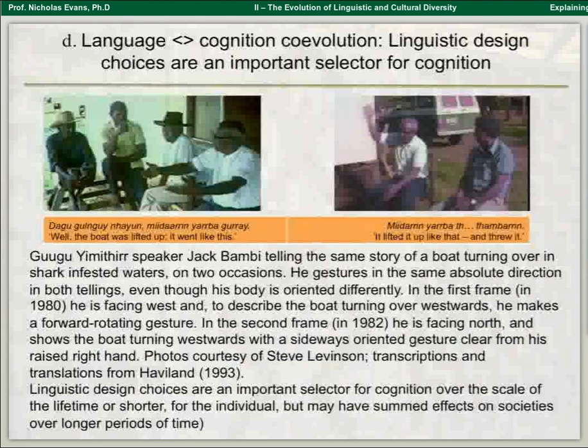The final type of co-evolution, on a much shorter scale, is between language and cognition — here we enter the realm of Sapir-Whorfian effects. Many of you will know the famous case of many Australian languages where the default way of referring to objects, rather than using 'this' or 'that' or 'left' or 'right', is to locate things in absolute space: north, south, east, and west. This is a man called Jack Bumby, who was videoed by two different investigators.